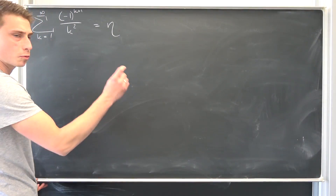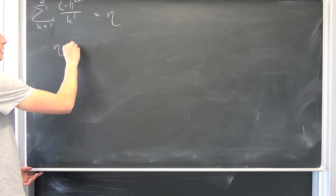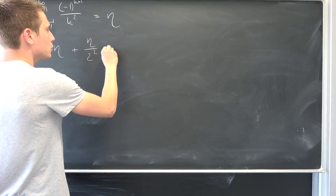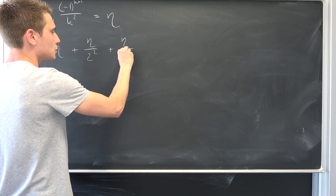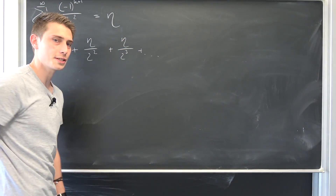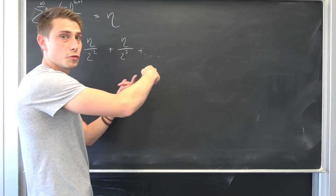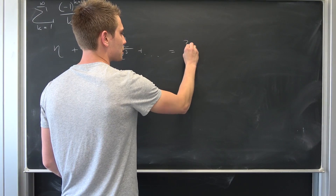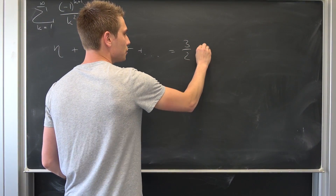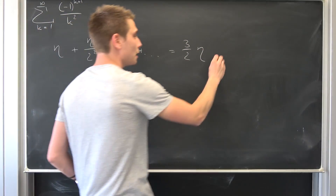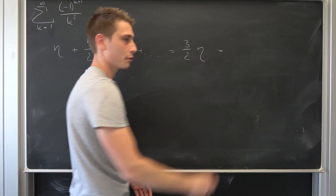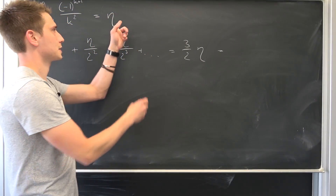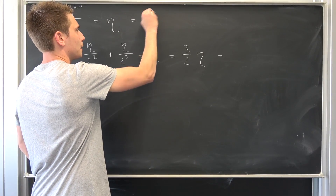What we were doing: we were using our eta, and we were adding eta over 2 squared to it, then adding eta over 2 to the third power, up until infinity — eta over 2 to the fourth power, and so on. What we arrived at was that this was nothing but 3 over 2 times eta. This in itself is nothing but pi squared over 8, because eta right here is pi squared over 12.